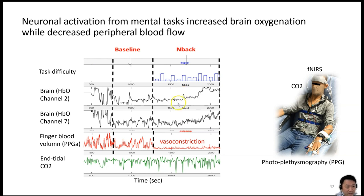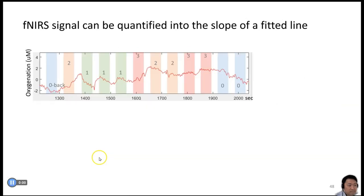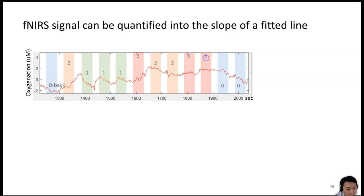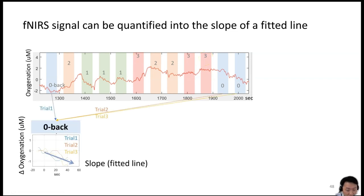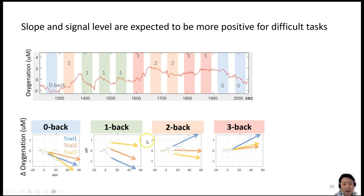How do we quantify brain activity during this mental work? We computed the slope of a fitted line. The tracing shows changes in HbO — oxygenation of the brain — over the whole study period, with different N-Back levels marked in different colors. For all the 0-Back trials, we collect them and fit a line; for this easy task, the slopes are negative. For 1-Back, 2-Back, and 3-Back, when we do the same thing, the slope gradually increases. That slope is what we quantified.